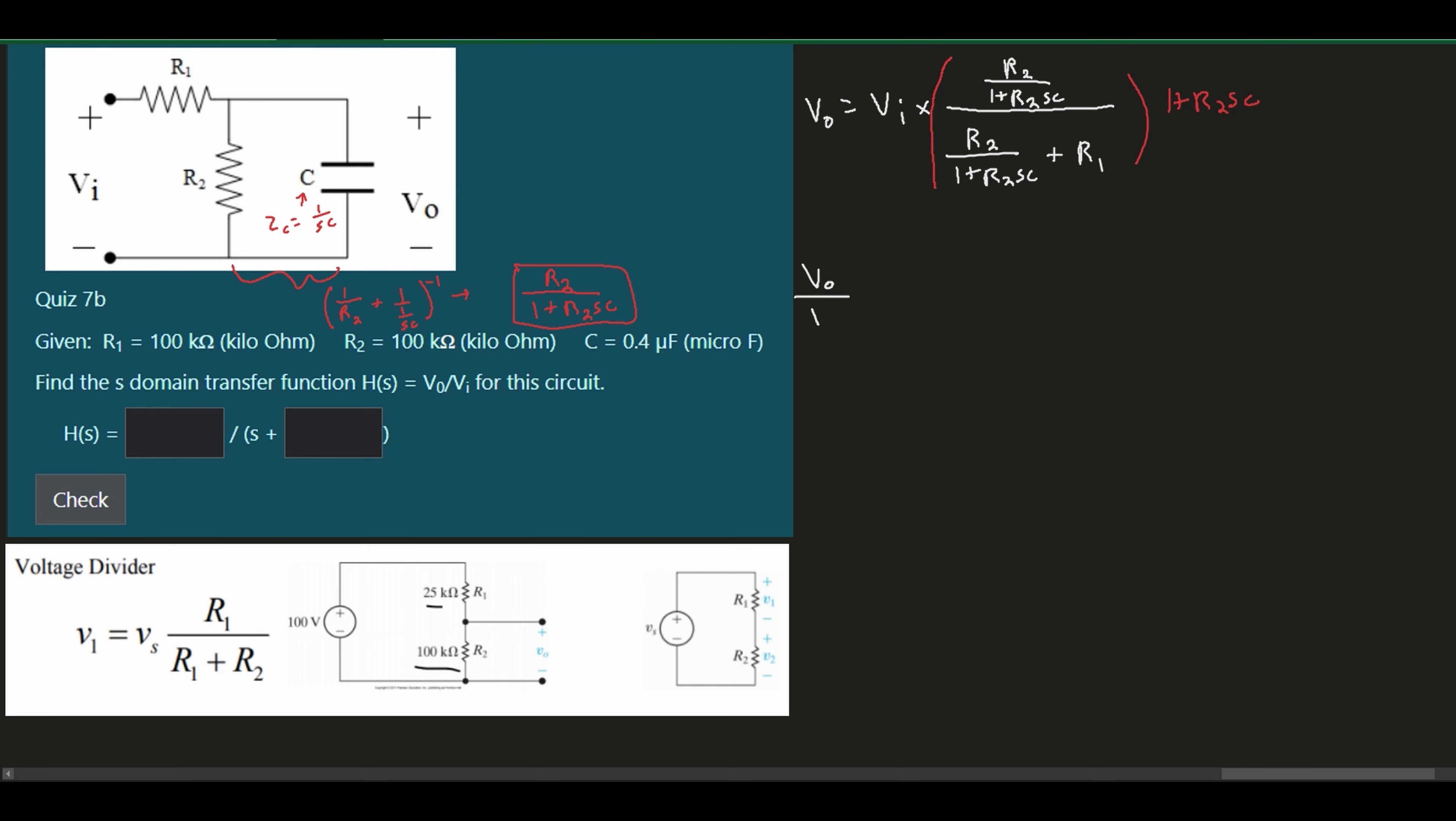So we're going to have V0 over our Vi, and this is equal to R2 divided by R2 plus R1. And then inside of here, we are going to have our R1 plus R2 S times C. And so this is our equation now.